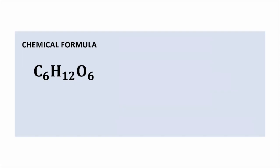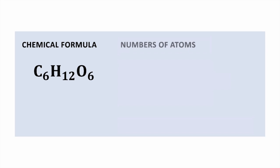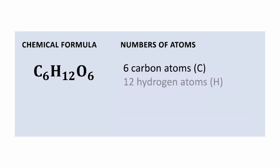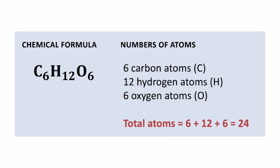Here are some examples of chemical formulas. C6H12O6 is the formula for glucose. The subscript 6 to the right of the C means there are six carbon atoms. The subscript 12 to the right of the H means there are 12 hydrogen atoms. And the subscript 6 to the right of the O means there are six oxygen atoms. Adding these up: 6 plus 12 plus 6 equals 24 atoms total in this chemical formula.